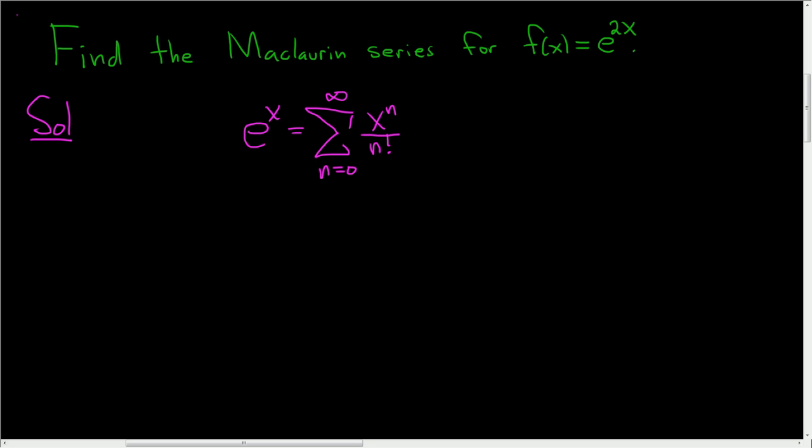So in this problem, we want the Maclaurin series for e to the 2x, so all we have to do is replace x with 2x. So e to the 2x is equal to the infinite sum, as n runs from 0 to infinity.